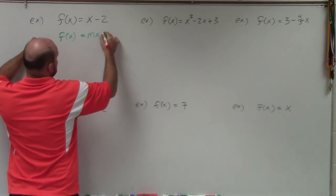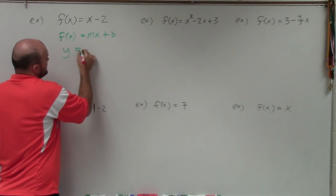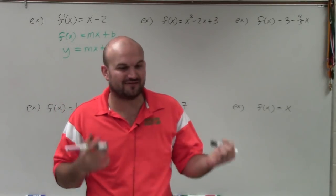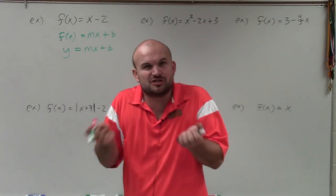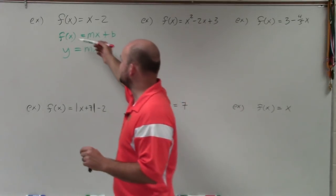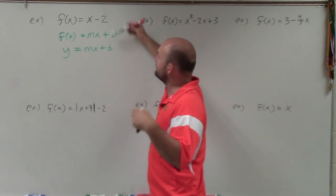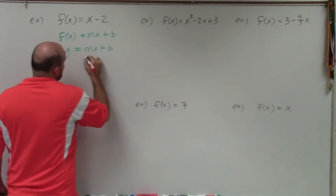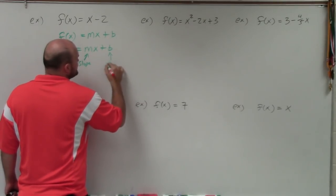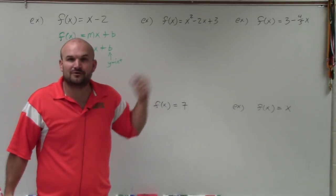That format in function notation is mx plus b. You might be more familiar with the equation format, the xy format, which is y equals mx plus b. The difference between the equation and the function is basically f of x and y, which just represent our output values. The main ingredients we're looking for are: do we have an m and do we have a b? Because if we're going to graph a line, we need to know the slope and the y-intercept. If we can't determine the slope and y-intercept in the form mx plus b, it's not going to be linear.